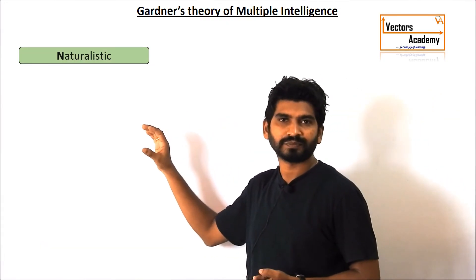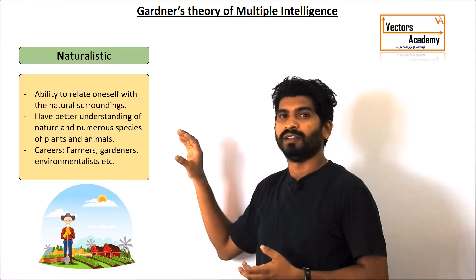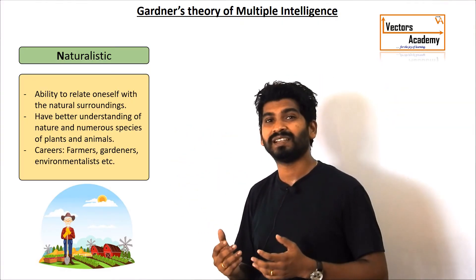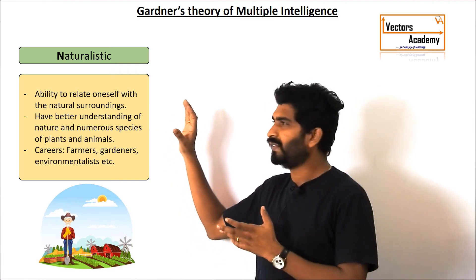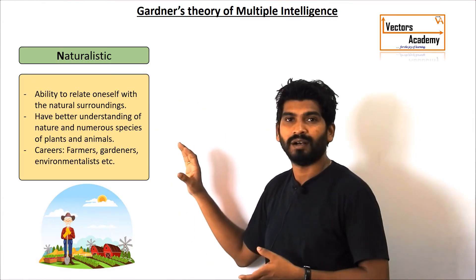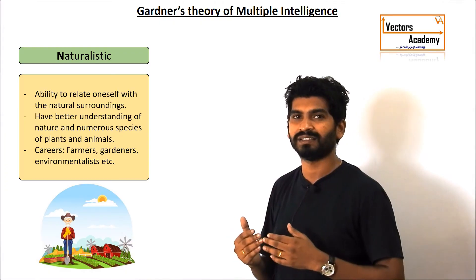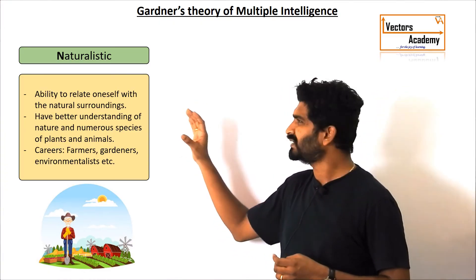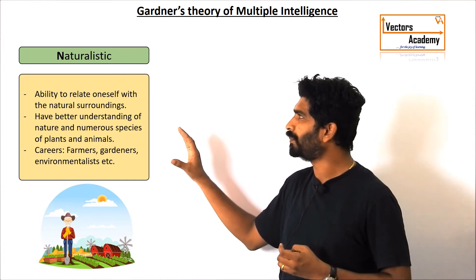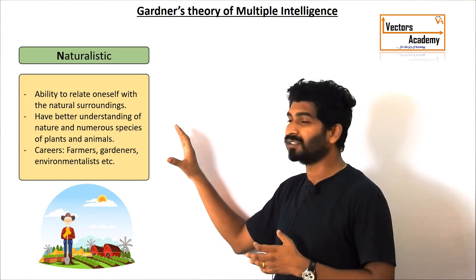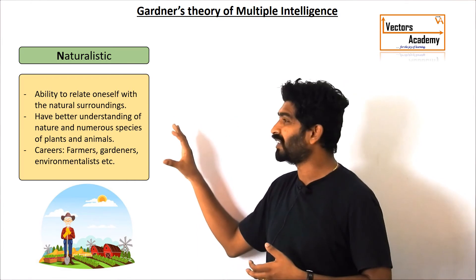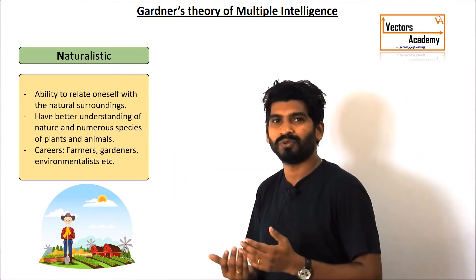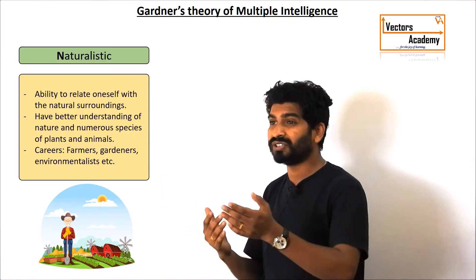The next comes naturalistic intelligence. Now naturalistic intelligence here means how a person is able to withstand with the environment. How easily he is able to adapt to the surroundings. Now such type of persons can become farmers, gardeners or landscapers. These are the people who are able to adapt to the surroundings properly. Who is able to gel to the environment.